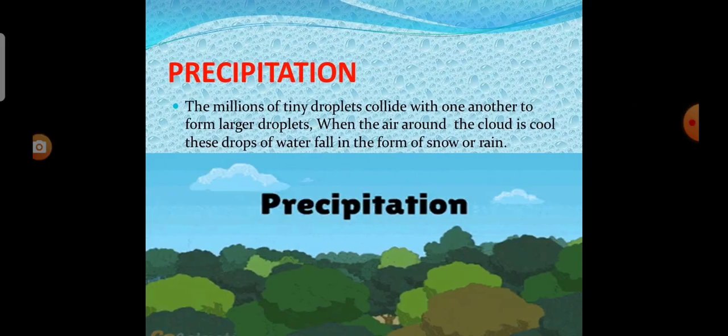The last one is precipitation. The millions of tiny droplets collide with one another to form large droplets. When the air around the cloud is cool, these drops of water fall in the form of snow or rain.